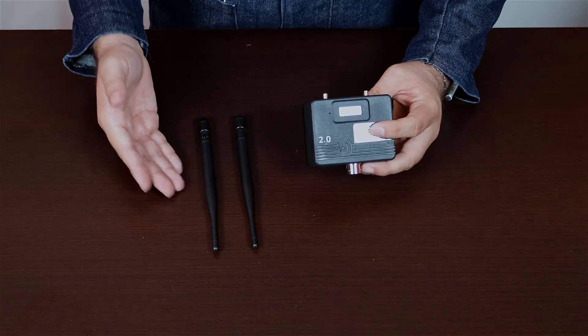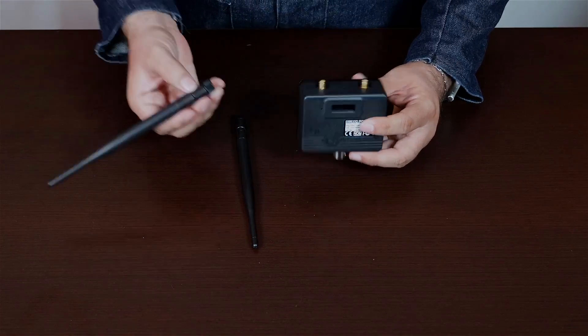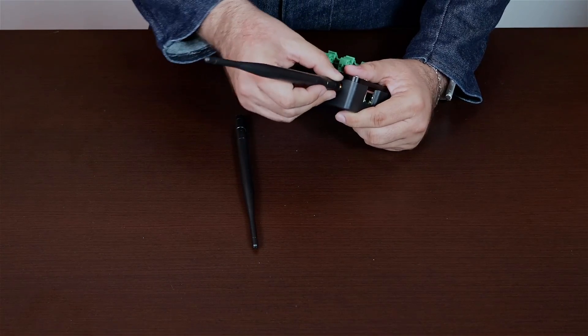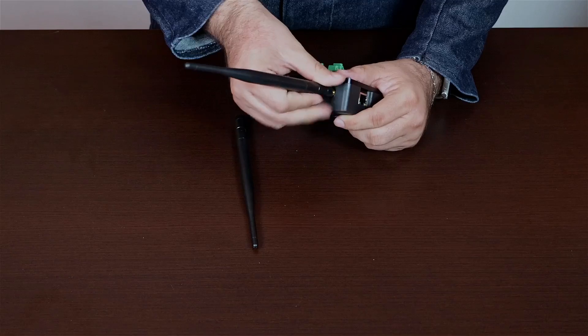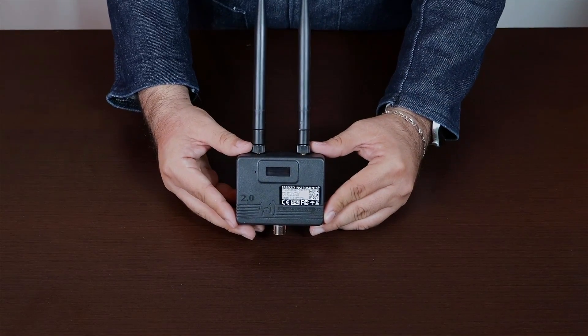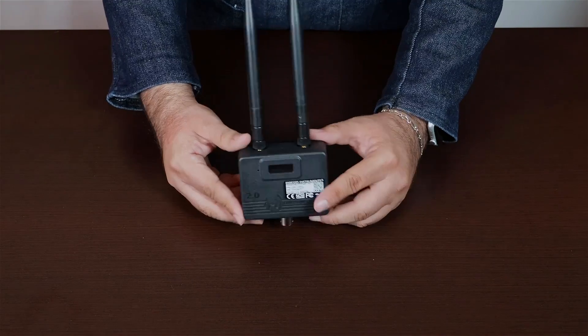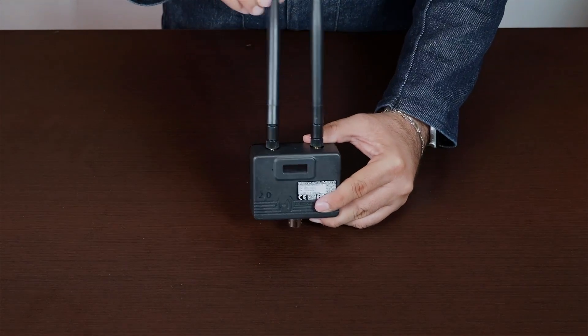By default, you will have these antennas with your gateway. To install them, simply screw them on the top of your gateway. Remember, the antenna signal pattern is not spherical but elliptical, perpendicular to the direction they are pointing to. You can orient the antennas for better reception.